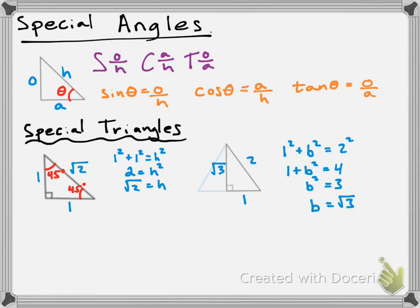Now for the angles — all angles in an equilateral triangle are equal and add up to 180 degrees, so each angle is 60 degrees. The angle shared with the equilateral triangle is 60 degrees. We already have a 90-degree angle in our triangle, so the remaining angle must be 30 degrees. So this is our second special triangle — the 30-60-90 triangle — and I want you to memorize how we built it.